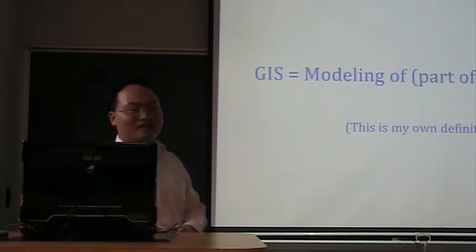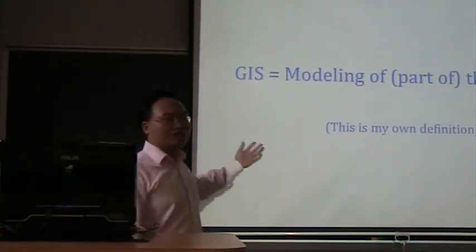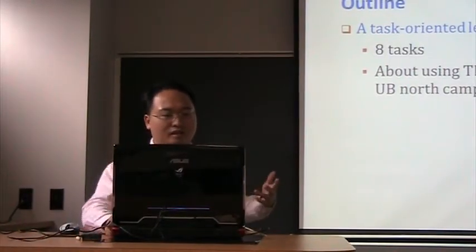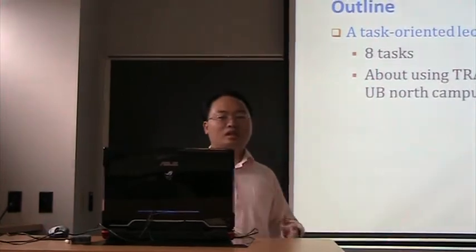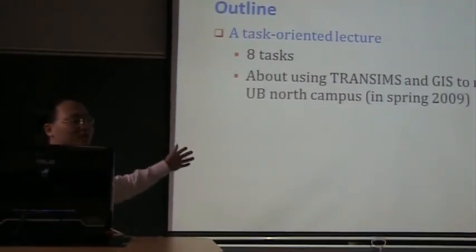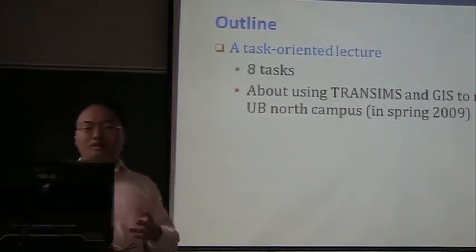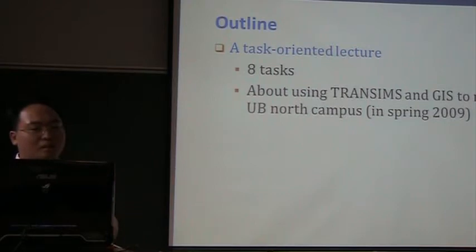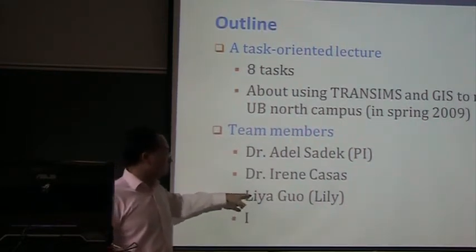The first thing is about the definition of GIS. I want to give you my definition. I think GIS is just about modeling — modeling of the Earth, or modeling part of the Earth. It doesn't involve anything with the Moon or Mars. In order to give you a lecture that is different from your GIS class, I changed the lecture from the traditional theory-oriented to task-oriented. I'm going to tell you the story about using transients and GIS to model UB North Campus, and I divided the task into eight sub-tasks. This project happened in spring 2009, and we had a team which includes two faculty members and two student members, which is Lily and me.